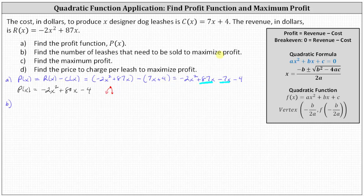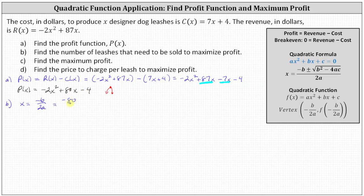The x-coordinate of the vertex gives us the number of leashes that need to be sold to maximize profit, and the y-coordinate gives us the maximum profit. For part b, the x-coordinate of the vertex is x equals negative b divided by 2a. For our function, a equals negative 2, b equals 80, and c equals negative 4. So we get negative 80 divided by 2 times negative 2, which is negative 80 divided by negative 4, equal to positive 20. Twenty leashes need to be sold to maximize profit.